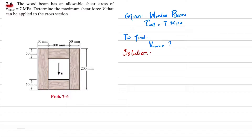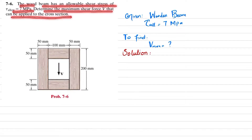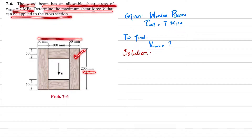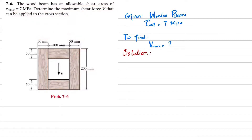Welcome back. Problem 7-6: the wood beam has an allowable shear stress of 7 megapascal. Determine the maximum shear force V that can be applied to the cross section. The cross section of the beam has a height of 200 mm and a width of 200 mm, and the allowable shear stress is 7 megapascal. We are asked to find the maximum shear force.